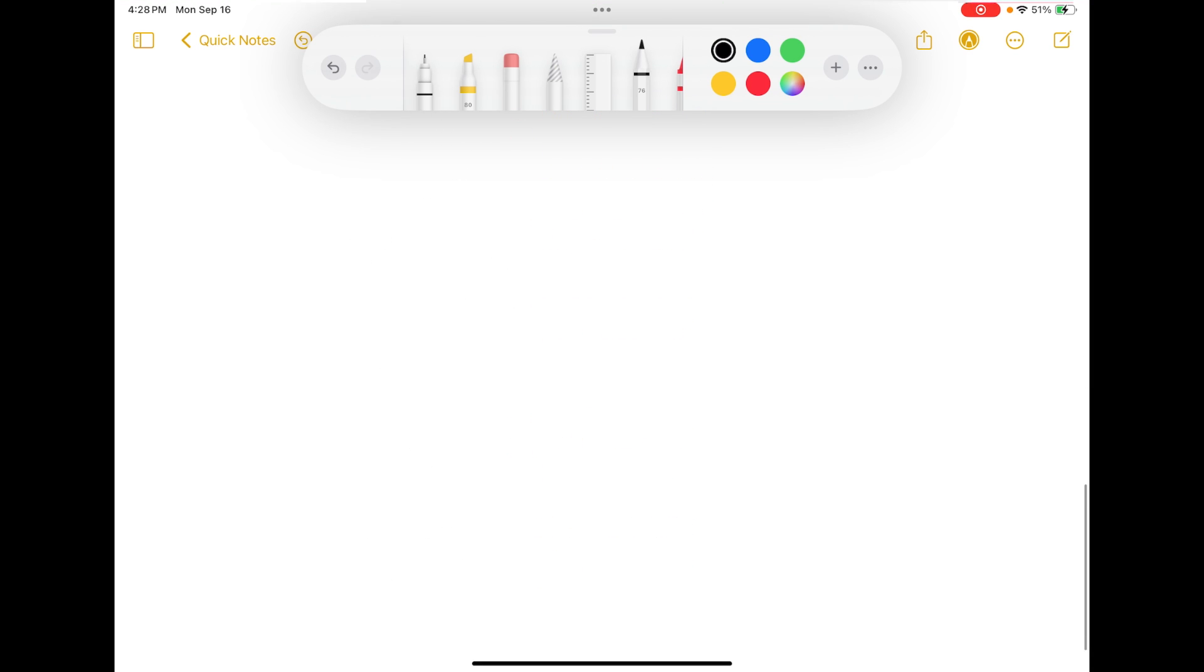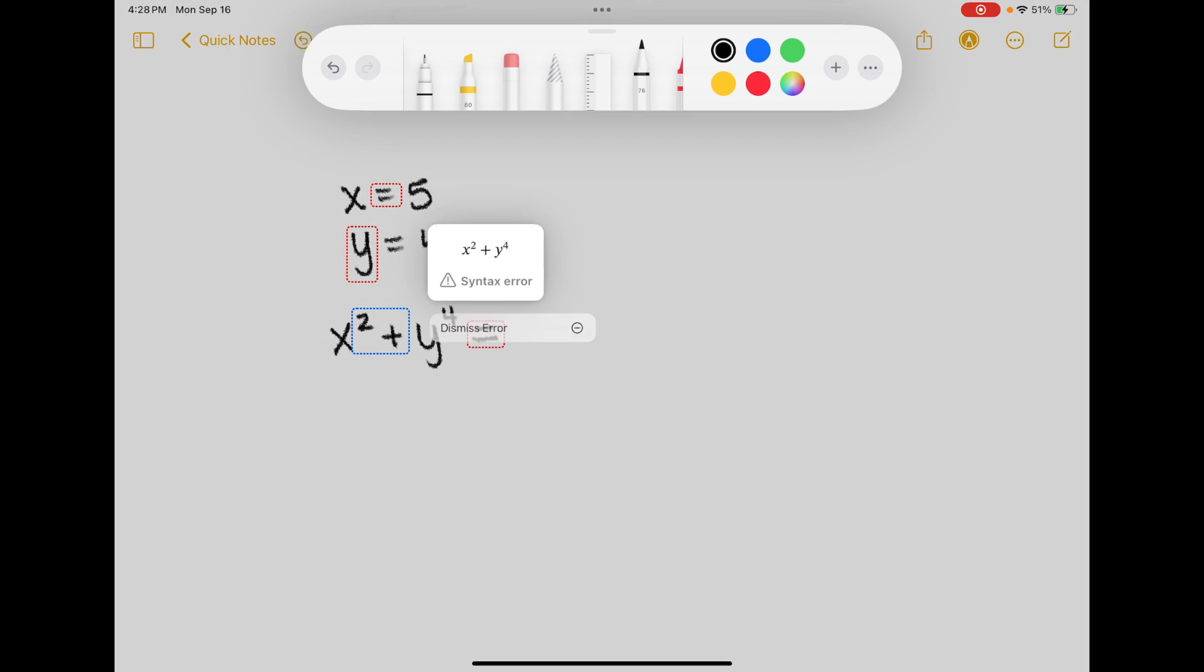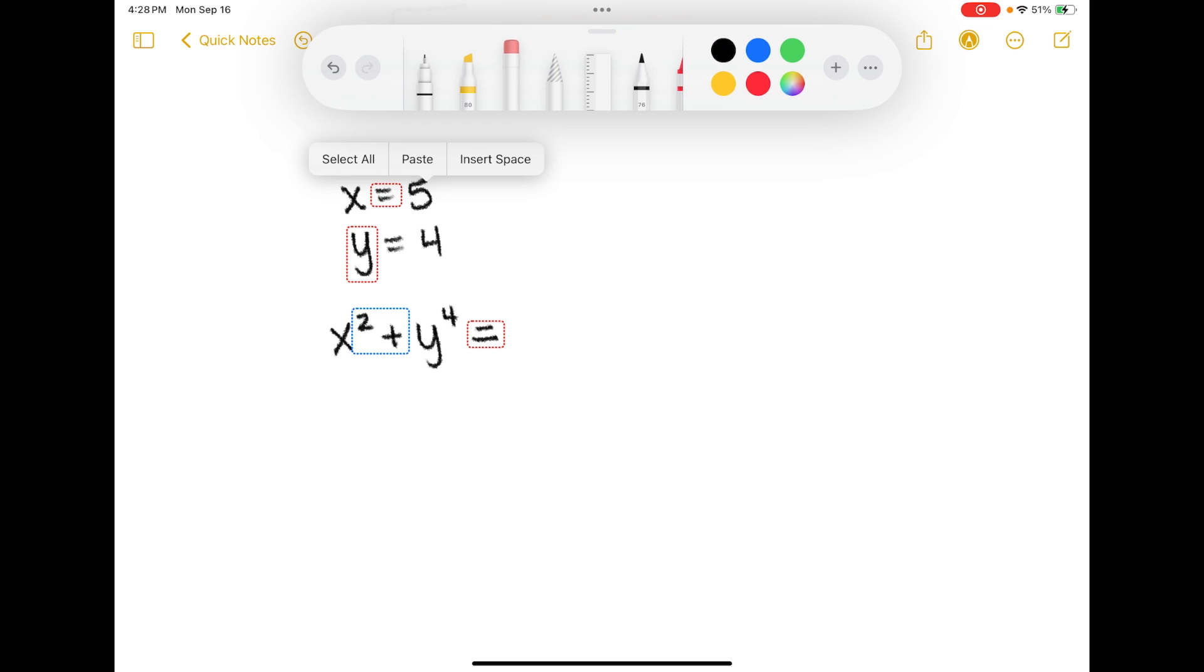So let's talk about equations. If I typed in an equation let's say x is 5, and let's say y is 4, and then if I below there write x squared plus y to the fourth equals, it will or should recognize everything here and want to do a calculation. Now I have seen it, it doesn't always work. Like I feel like this is really glitchy.